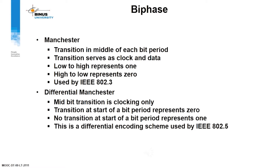Biphase — Manchester: There is a transition in the middle of each bit period. The transition serves as both clock and data. Low to high represents one; high to low represents zero. Used by IEEE 802.3. Differential Manchester: The mid-bit transition is for clocking only. A transition at the start of a bit period represents zero; no transition at the start of a bit period represents one. This differential encoding scheme is used by IEEE 802.5.